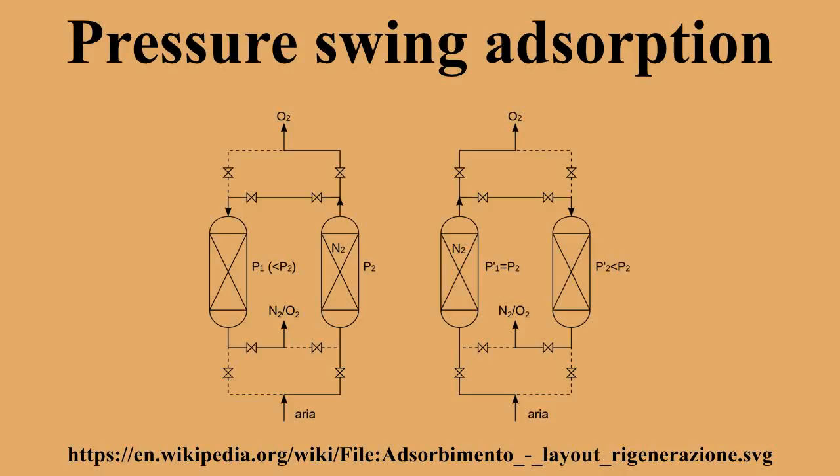Rapid pressure swing adsorption, or RPSA, is frequently used in portable oxygen concentrators. It allows a significant reduction in the size of the adsorbent bed when high purity is not essential and feed gas can be discarded. It works by quickly cycling the pressure while alternately venting opposite ends of the column. This means that unadsorbed gases progress along the column much faster and are vented at the distal end, while adsorbed gases do not get the chance to progress and are vented at the proximal end.